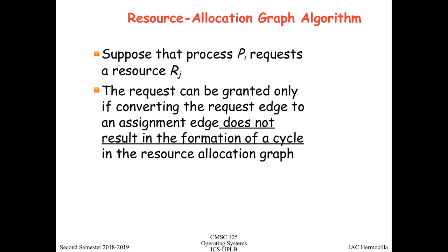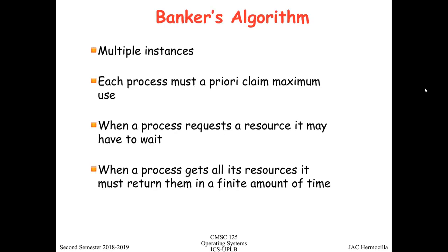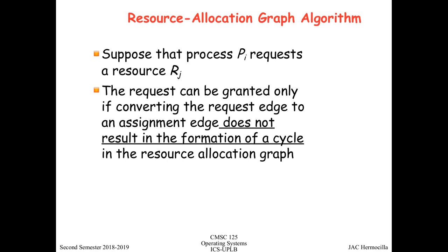In summary, the resource allocation graph algorithm is used only for resource types with a single instance. A request can only be granted if the request edge, when converted to an assignment edge, will not form a cycle in the resource allocation graph. That's the deadlock avoidance algorithm for single-instance resource types.